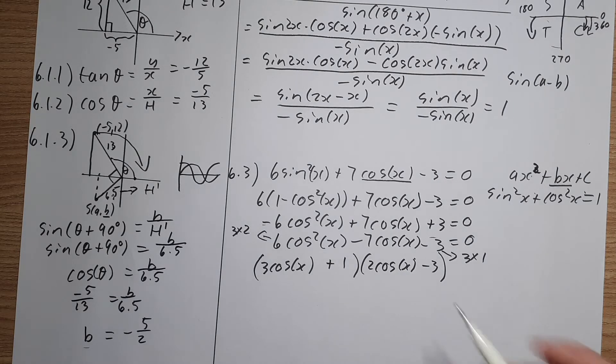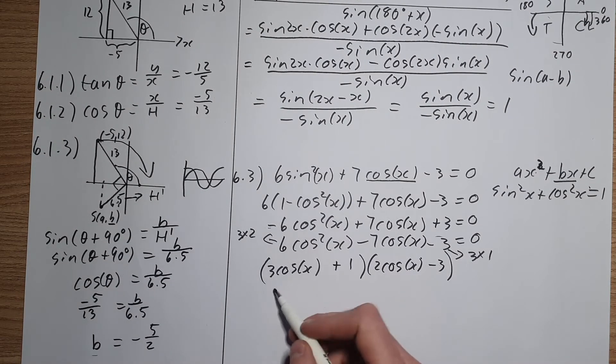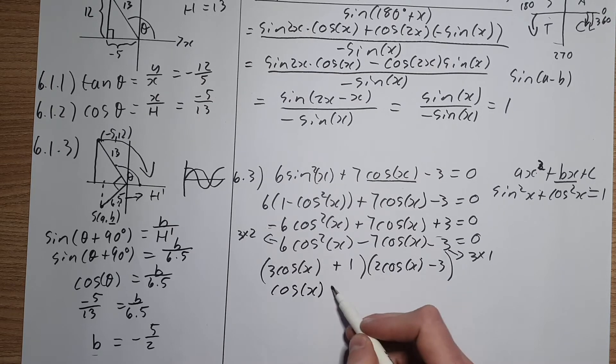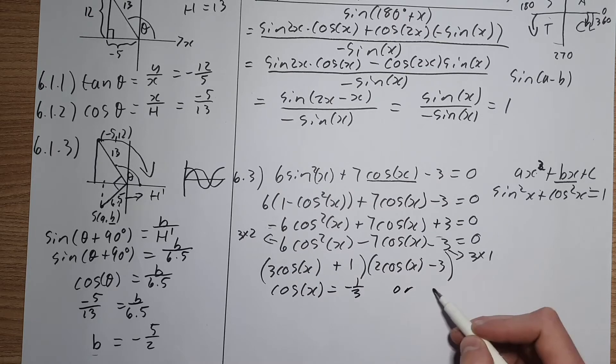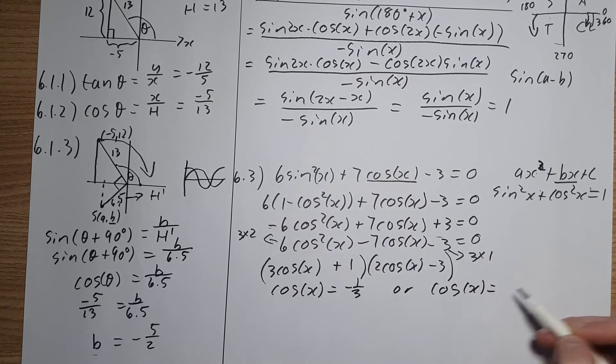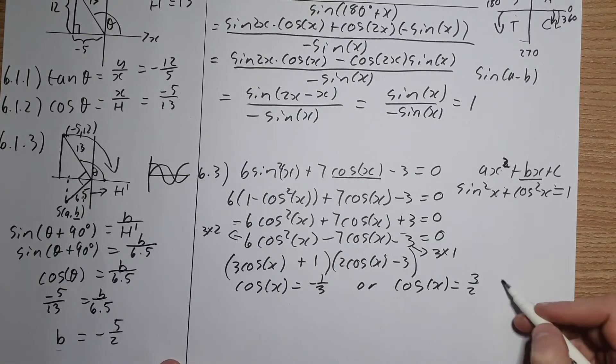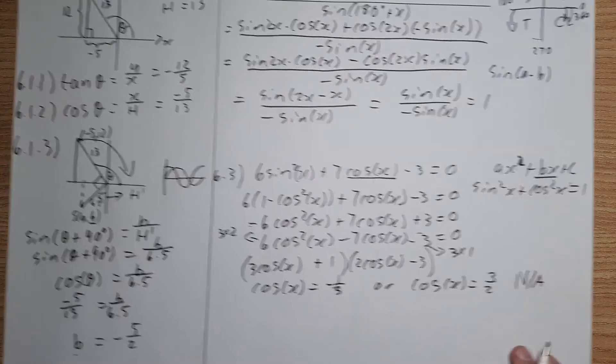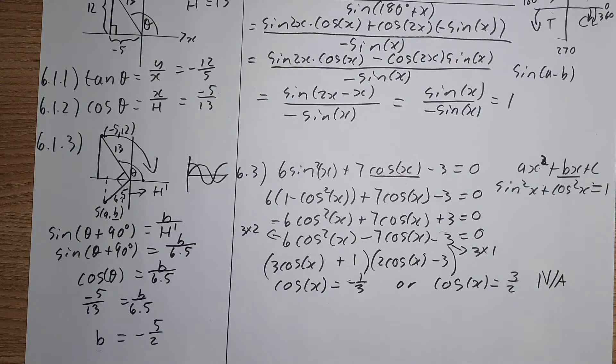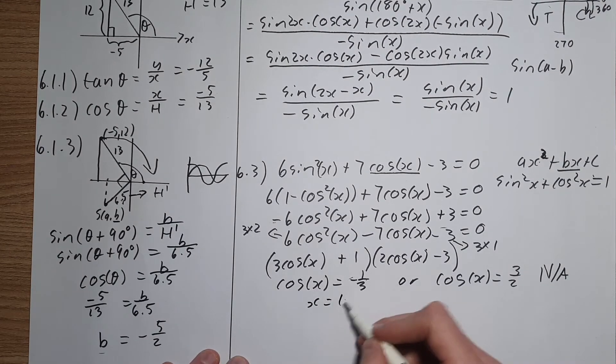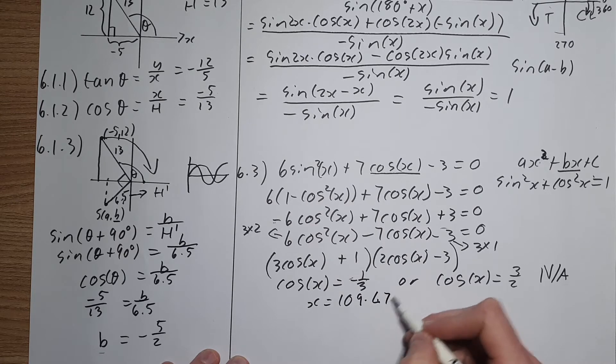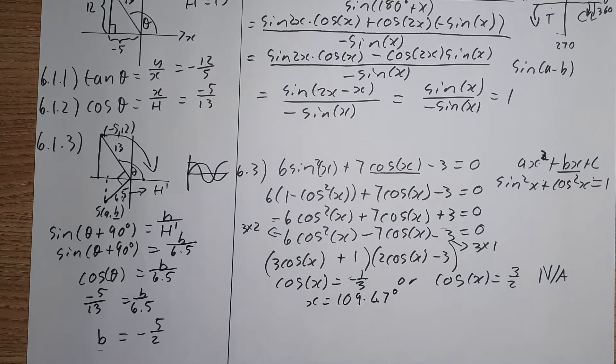But now we need the general solution. So quickly just solve this. We're going to end up with cos of x equal to negative 1 over 3, or cos of x equals to 3 over 2. Now if you plug this into your calculator, it's going to tell you it's not applicable. So we're only dealing with the negative 1 over 3. Now if you put that into your calculator, it's going to spit out a value that is x equals to 109.47 degrees.